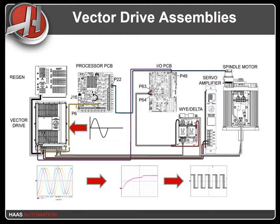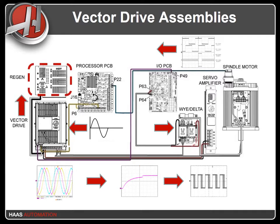As the spindle motor spins, its encoder generates feedback signals that represent its velocity and position. When the spindle motor reaches a certain velocity, the controller sends a command to the IOPCB to cycle the Y-Delta contactor assembly to switch from Y to Delta, and from Delta to Y during deceleration. When the motor is commanded to decelerate or stop, the motor generates back voltage. This voltage goes back to the drive's DC bus. The drive constantly monitors the DC bus, and when the voltage reaches a certain level, the drive dissipates the extra voltage through the regen load.